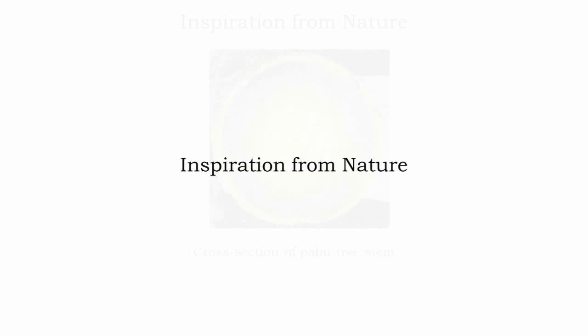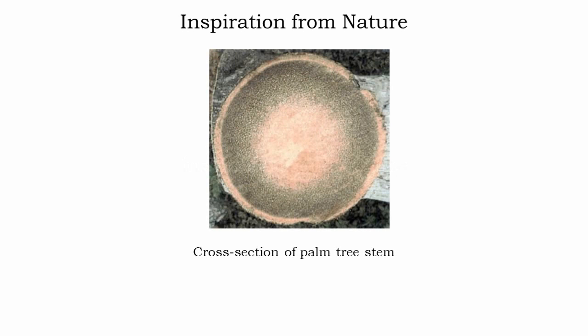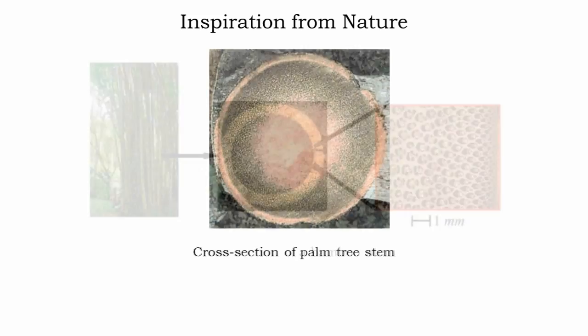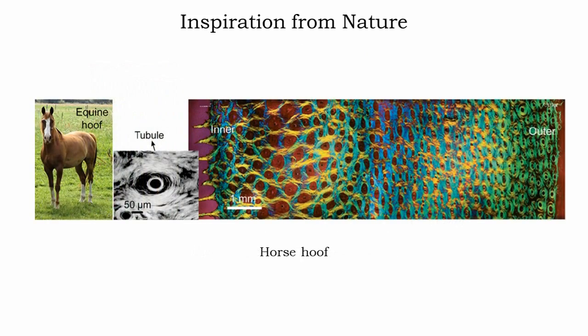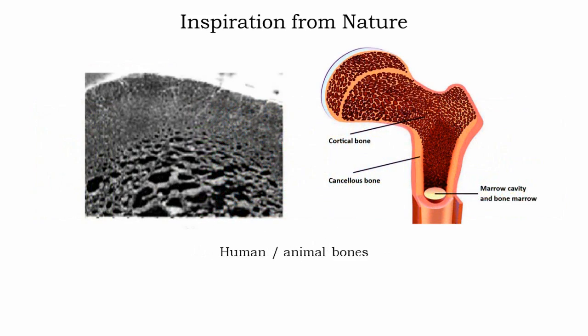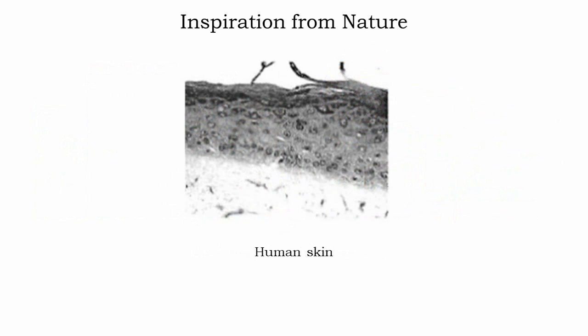Graded material exists extensively in nature. For example, stems of plants, bamboo, horse hooves, human or animal bones, and human skin are some examples of the naturally occurring functionally graded materials.